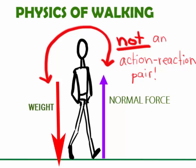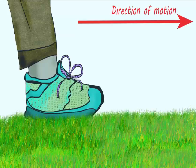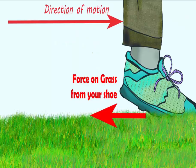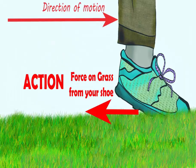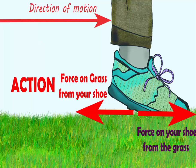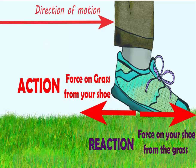Now let's see what happens when you walk. Action-reaction forces allow you to move forward. So when you move your leg backwards, your shoe exerts a force backwards on the grass. According to Newton's third law, the grass exerts a forward force in response on your shoe. So the force on the grass from your shoe and the force on your shoe from the grass is an action-reaction pair.